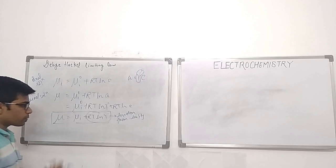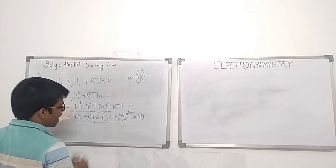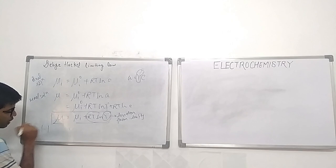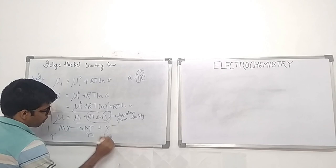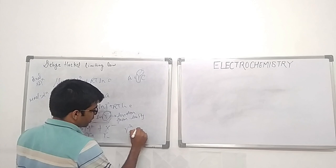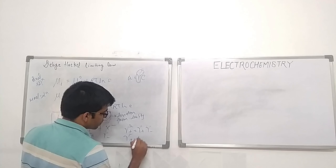We need to quantify γ. For a 1:1 electrolyte MX, which gives M⁺ and X⁻, we have γ₊ and γ₋. Their geometric mean is represented as γ± equals to (γ₊ · γ₋)^(1/2).